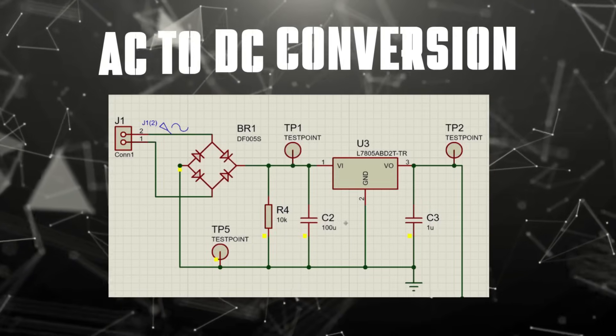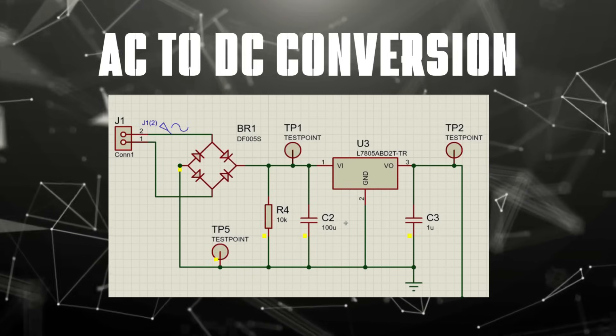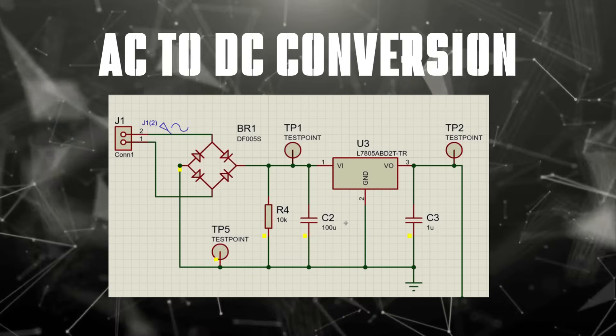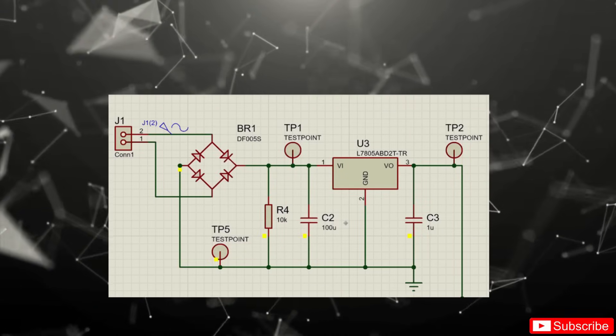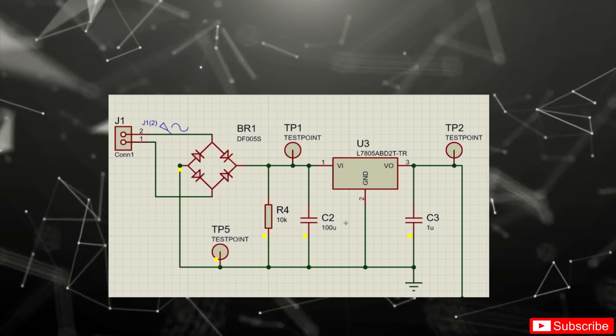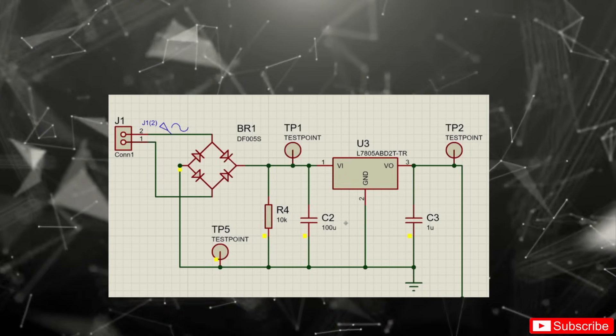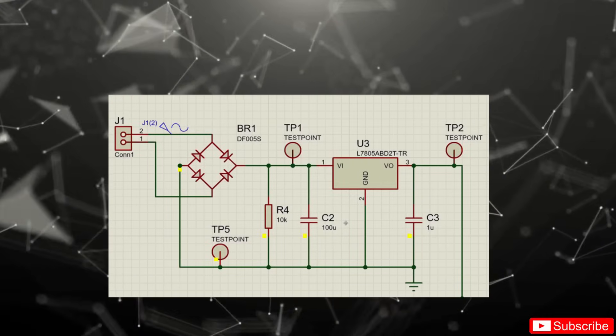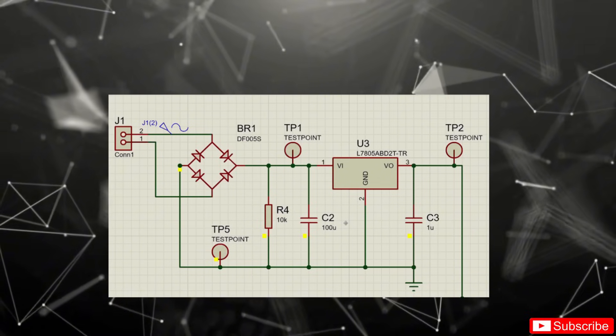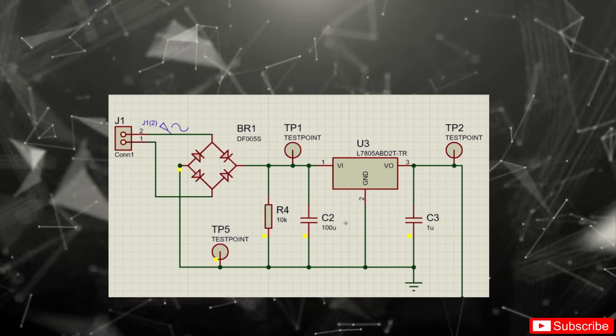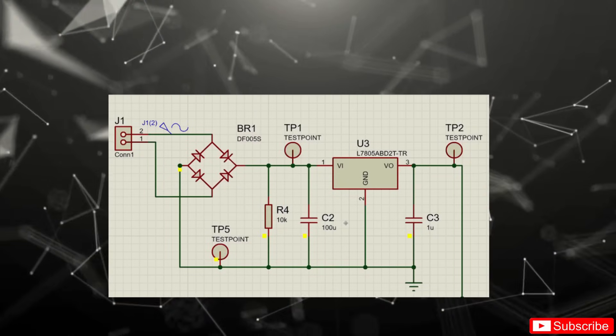To power the sequential LED circuit safely, we start with the AC to DC conversion and voltage regulation stage. The AC then enters a bridge rectifier, which converts it into pulsating DC using four diodes. To smooth out the voltage ripple, we add a large electrolytic capacitor. This stores charge and outputs a more stable DC voltage. That smoothed DC then feeds into a 7805 linear voltage regulator, which outputs a steady 5 volts, perfect for powering the 555 timer. To clean up any high-frequency noise, a small decoupling capacitor is placed at the regulator's output, ensuring a solid and clean power supply. This completes the power stage and sets the foundation for reliable timing and sequencing ahead.